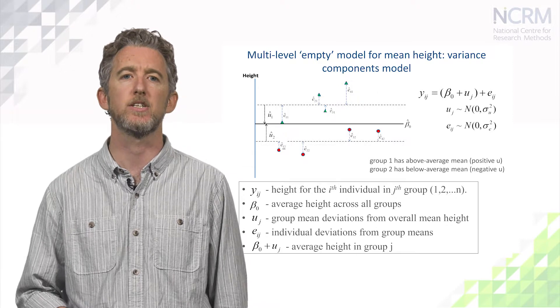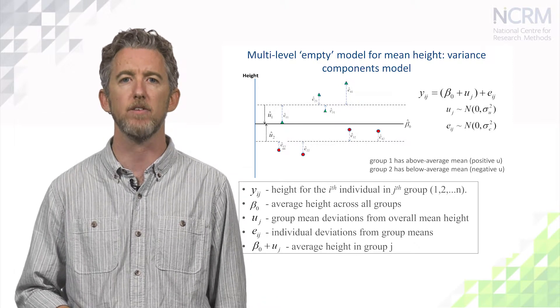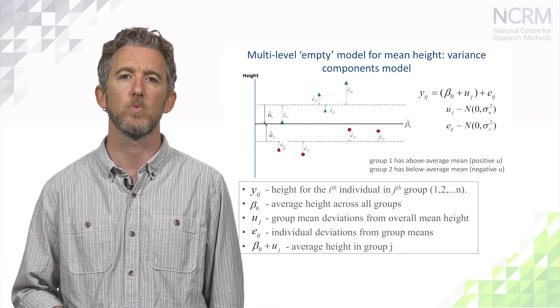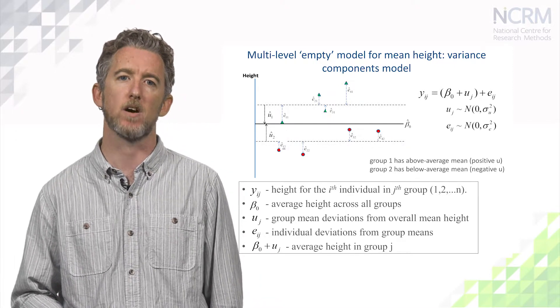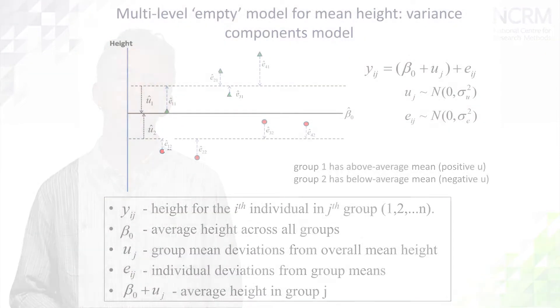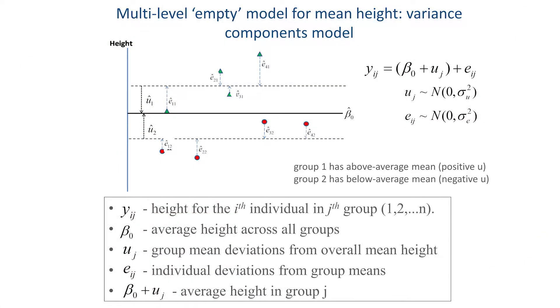Now, we can refer to y_ij as the height for individual i from group j. We still have an estimate of the mean height, β₀, which now refers to the average height of people across all families. And we include an additional set of residuals labelled u_j, which refer to the group mean differences in height from the overall mean.